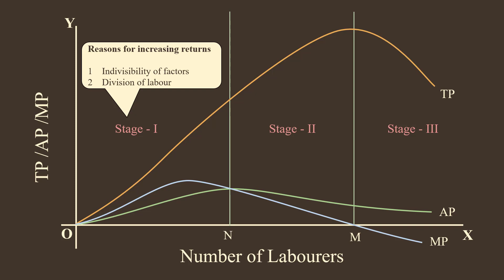2. Division of Labor. When additional units of variable factors are employed, the producer can use Division of Labor in perfect form. So, there is increasing returns in the first stage.